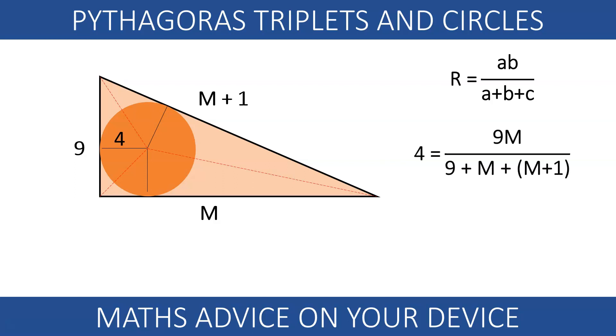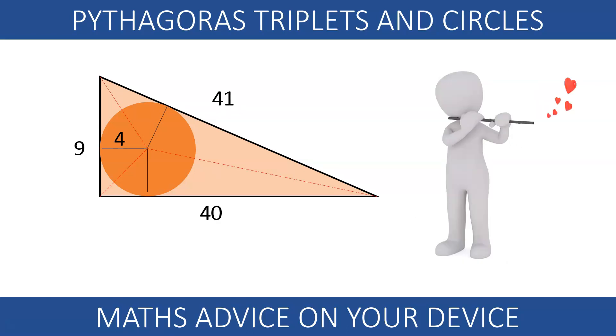Replacing these values into our equation and solving for M, we can figure out the next triplet. Voila, our next triplet!